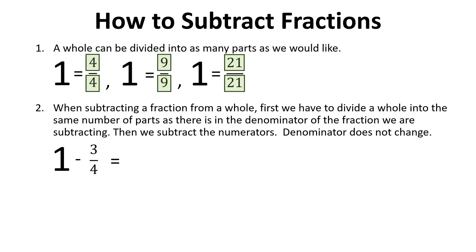For example, 1 minus 3 over 4 is equal to 4 over 4 minus 3 over 4, and that equals to 1 over 4.